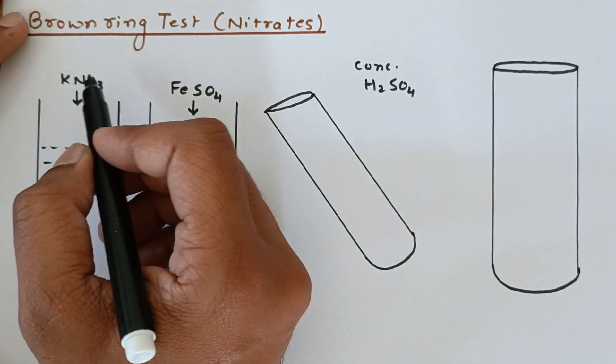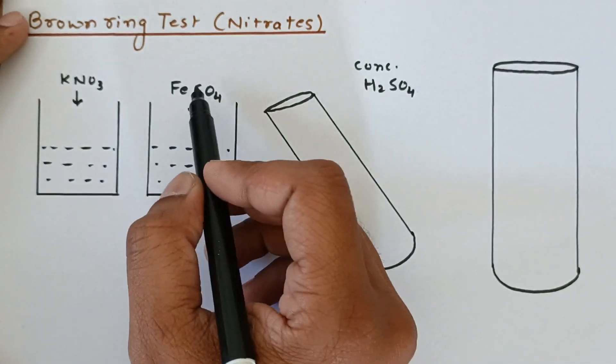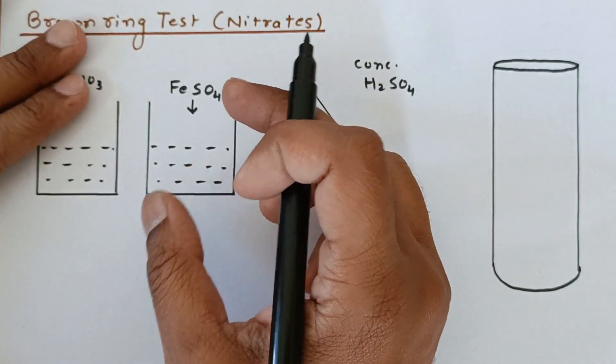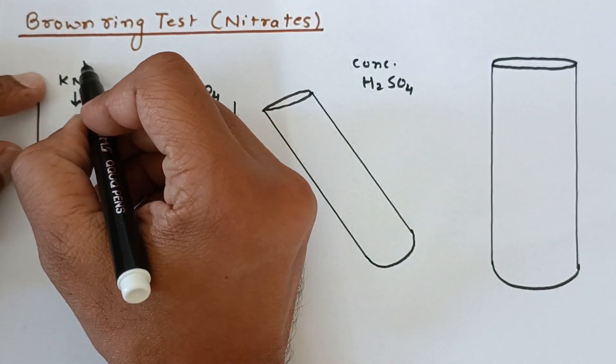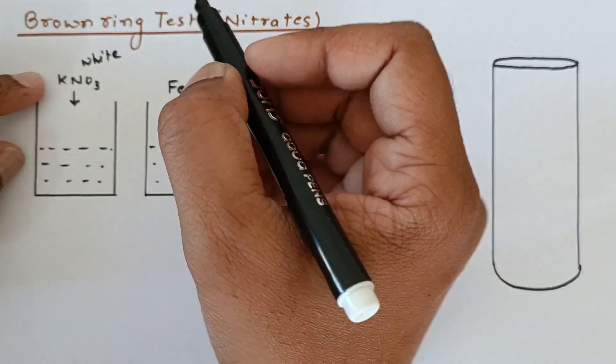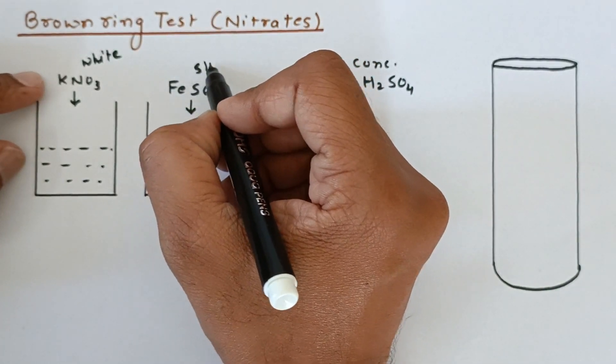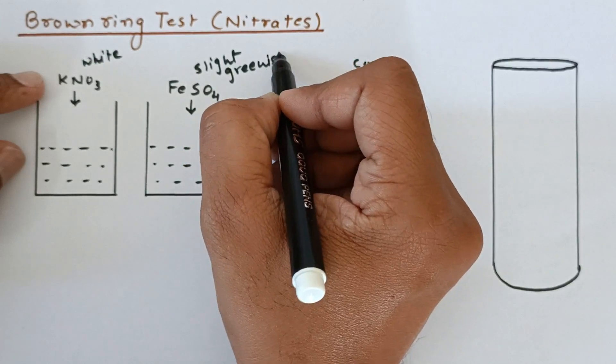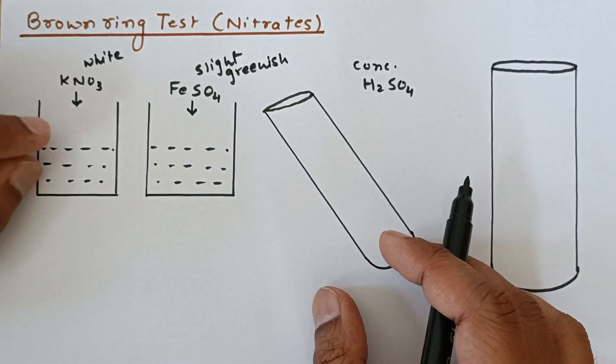Now KNO3 itself is completely soluble in water. FeSO4 is not completely soluble in water but still we have managed to make the solution by shaking it. This salt is white in color, while this one is slightly greenish in color as you have watched in the video.